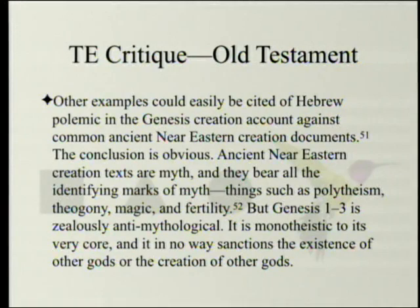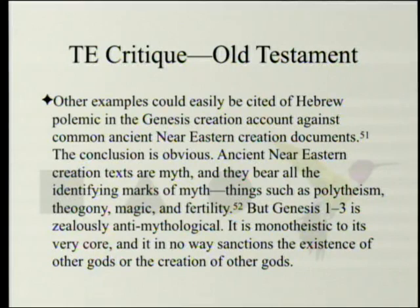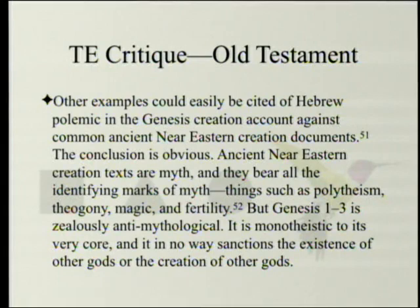Other examples could easily be cited of Hebrew polemic in the Genesis creation account against common ancient Near Eastern creation documents. The conclusion is obvious: ancient Near Eastern creation texts are myth and bear all the identifying marks of myth — things such as polytheism, theogony, magic, infertility. But Genesis 1-3 is zealously anti-mythological; it is monotheistic to its very core, and it in no way sanctions the existence or creation of other gods.